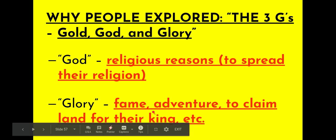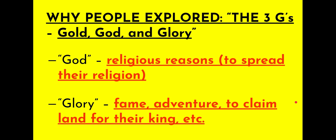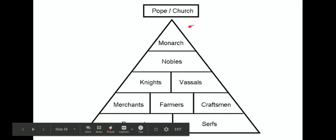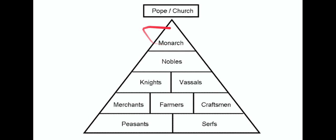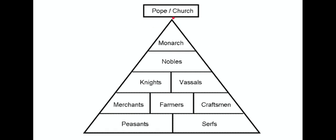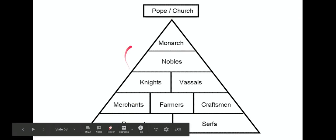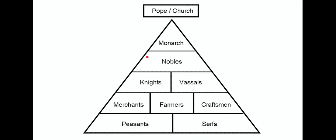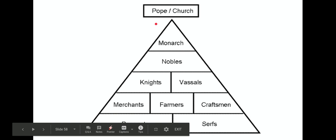And then glory is a big category that includes everything else — becoming famous. Some people do things to become famous, or just because it's an adventure to see what's on the other side of the ocean. And of course, to claim land for their king or their country. Because the church, the pope, the kings and queens, and nobles are above the common people, and if you're one of these lower people, you want to win their praise and maybe receive a financial reward or a title that can move you up this pyramid. That would be the glory reason.